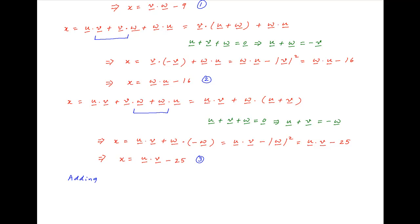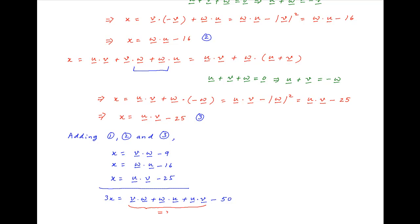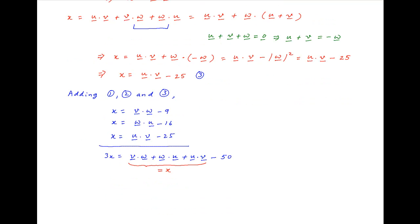Now, we add results 1, 2, and 3: x is equal to v dot w minus 9, x is equal to w dot u minus 16, and x is equal to u dot v minus 25. Adding these three expressions, the left-hand side is equal to 3x and the right-hand side is equal to v dot w plus w dot u plus u dot v minus 50. Notice that the sum of the first three terms on the right-hand side is equal to x. Therefore, this equation simplifies to 2x is equal to minus 50, which implies that the value of x is equal to minus 25, which is the required answer.